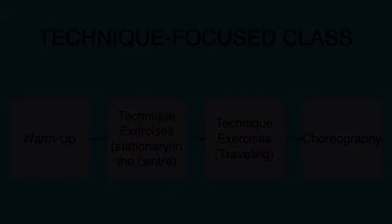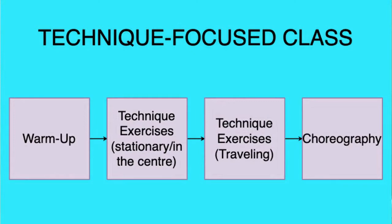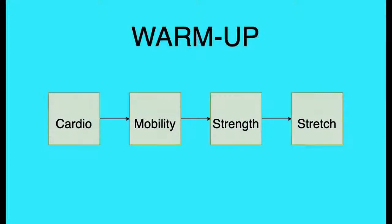Here is an example of a structure for a technique-focused class. Begin with a warm-up, move on to some stationary technical exercises and tasks, followed by some traveling technical exercises, and ending with learning some choreographic sequences and patterns. For a creative process-focused class, begin with a warm-up, followed by some guided improvisational tasks, then move on to individual or group creative tasks to find inspiration and create movement vocabulary. Then use similar creation tasks to create choreographic sequences and possibly work up to some form of a presentation or performance.